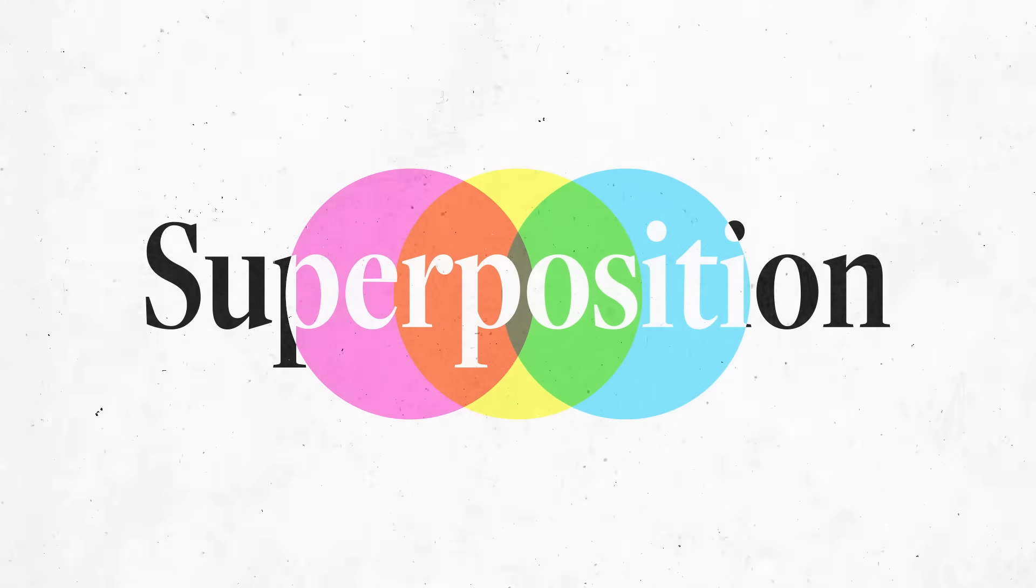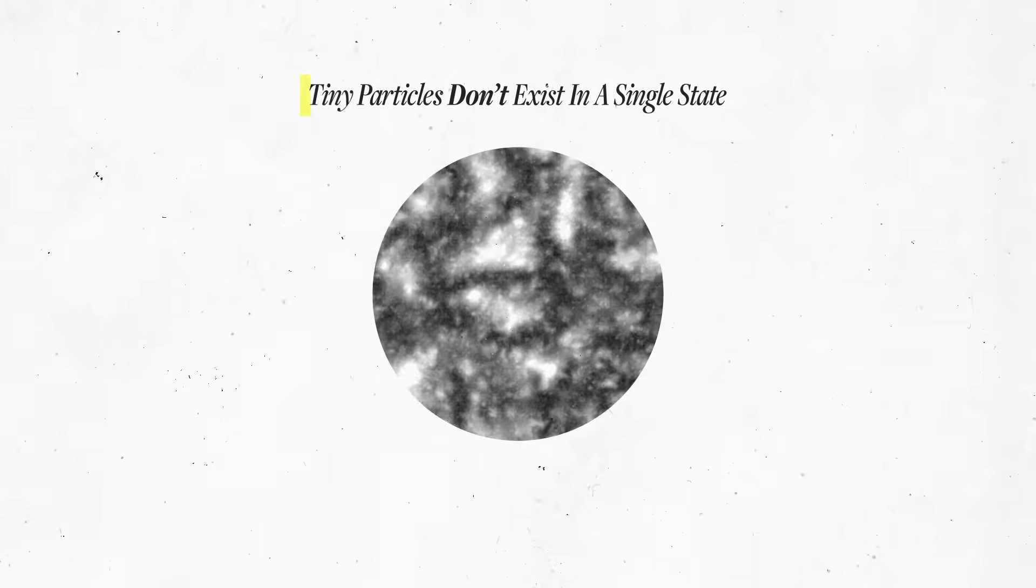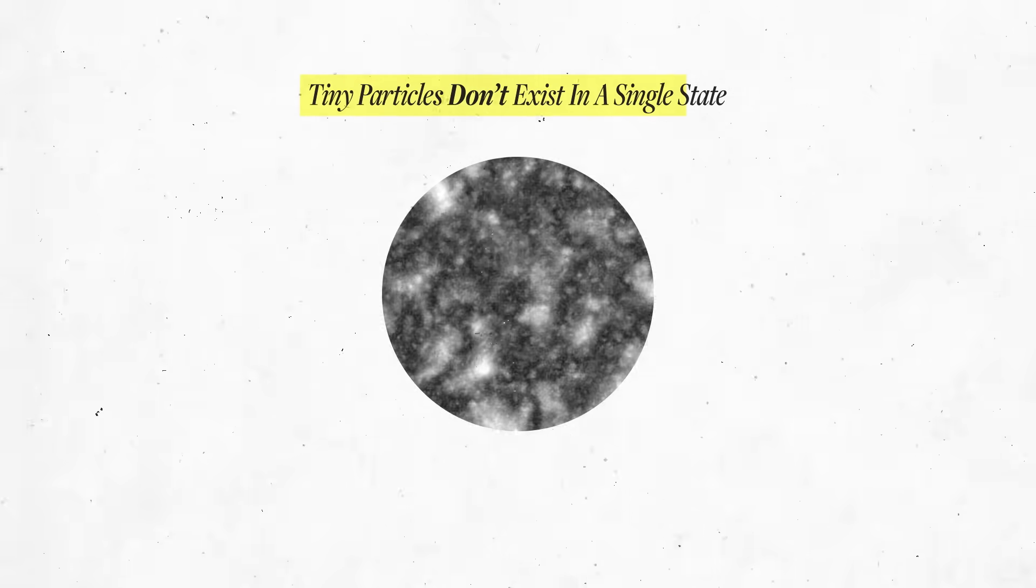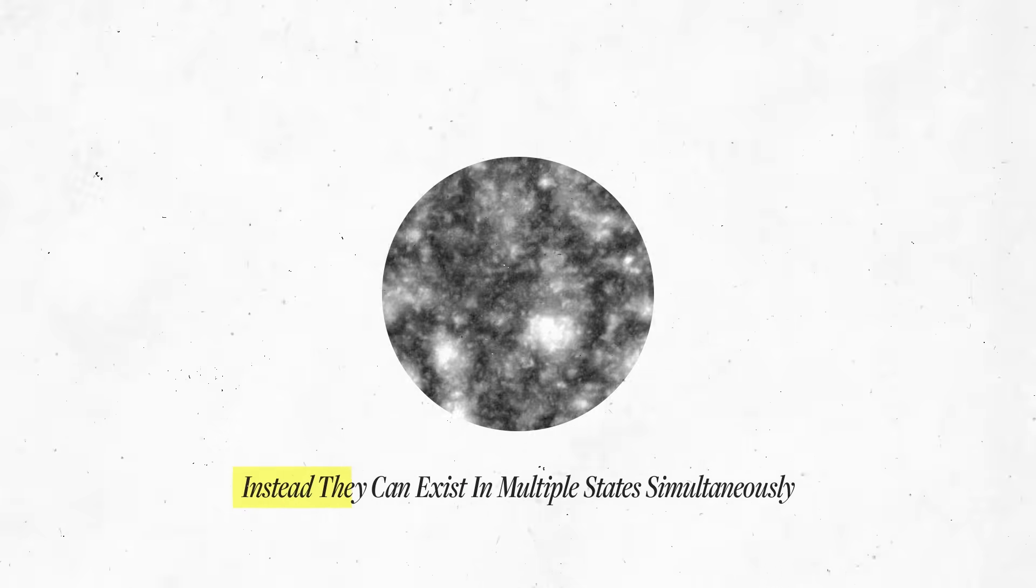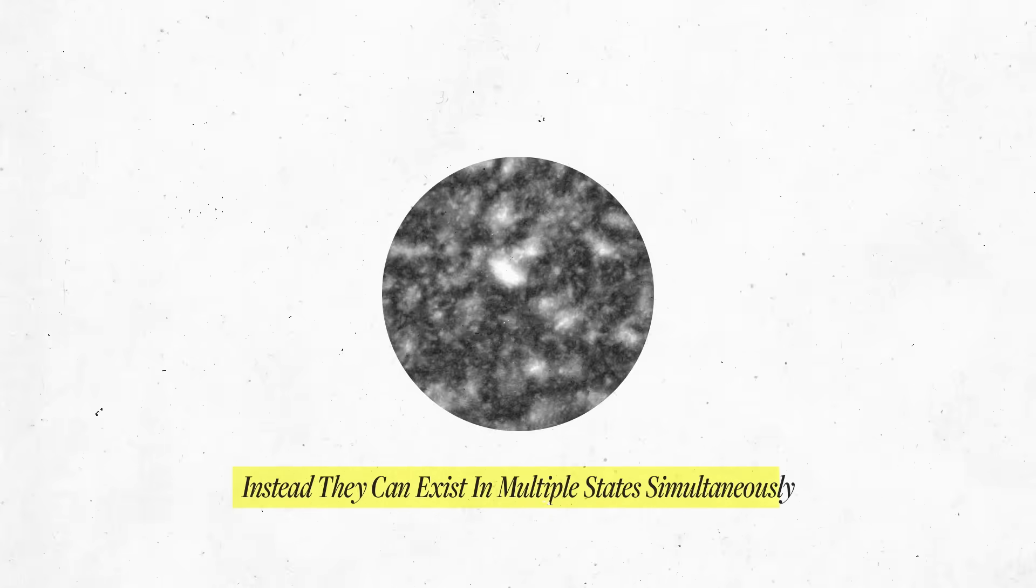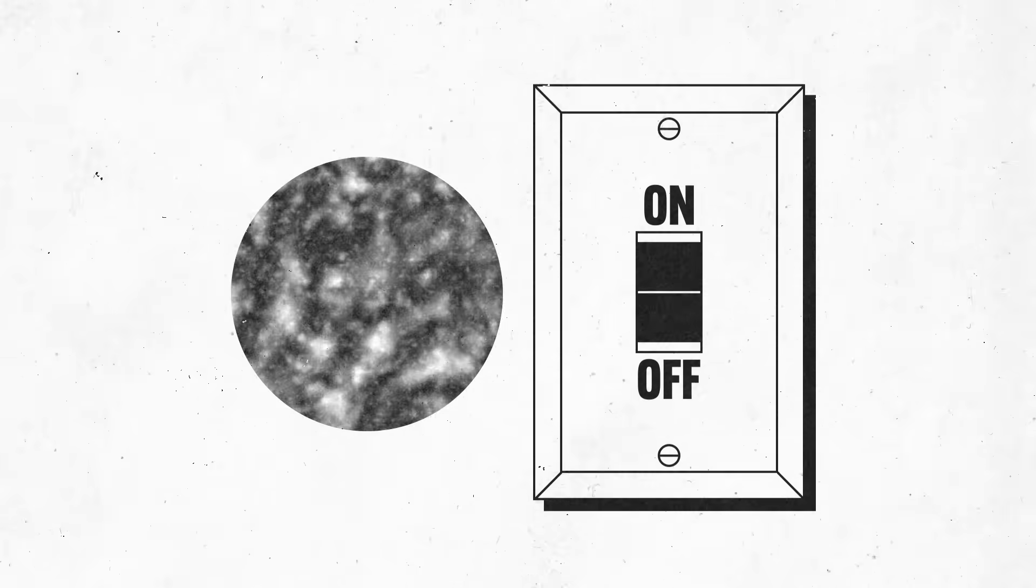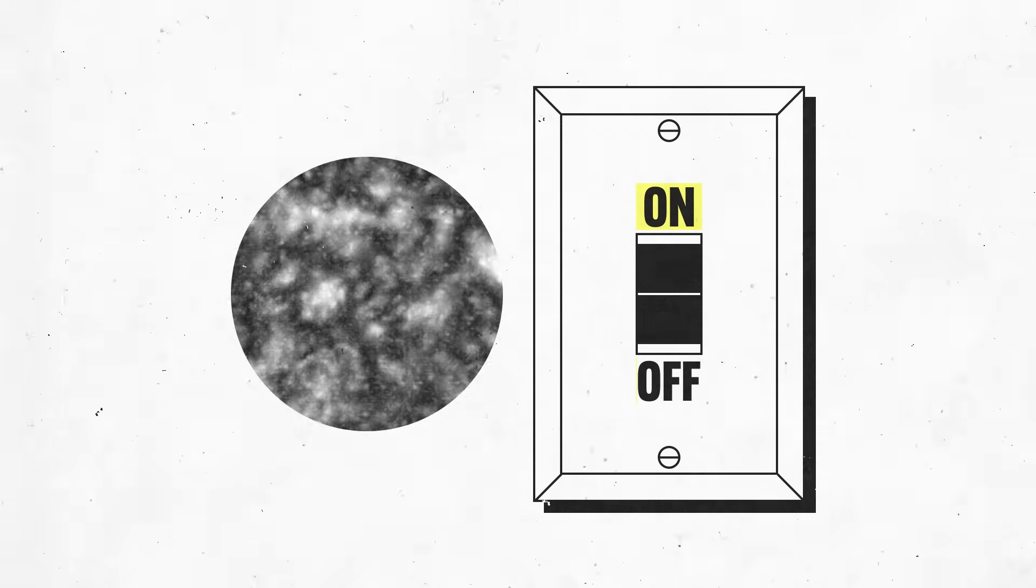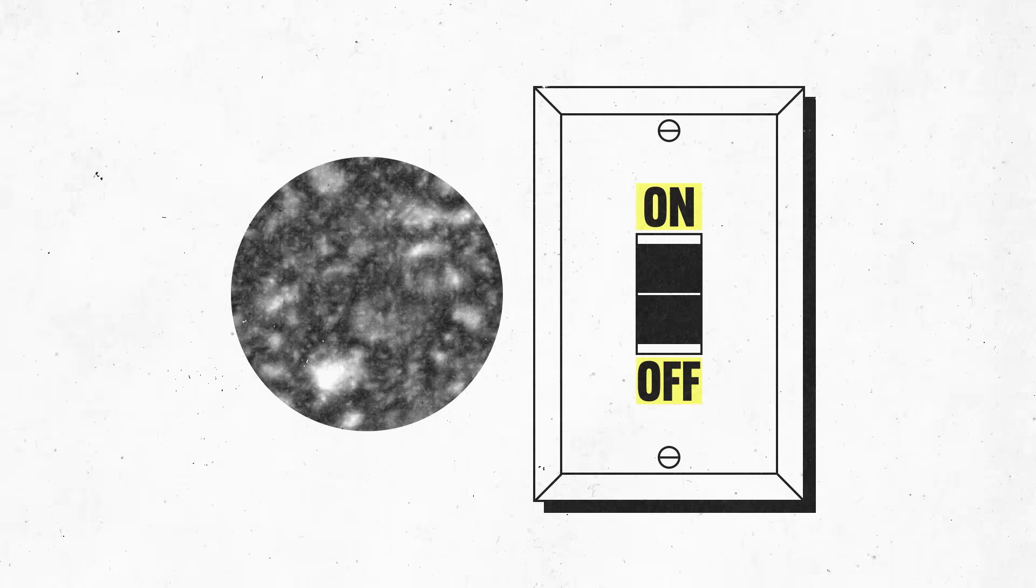The first principle is superposition. In the quantum world, tiny particles don't exist in a single state. Instead, they can exist in multiple states simultaneously. These particles known as qubits can be in both the on and off positions at the same time.